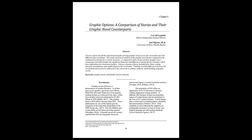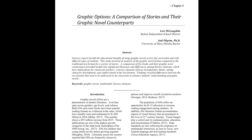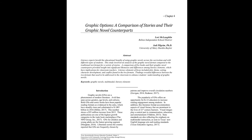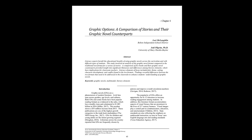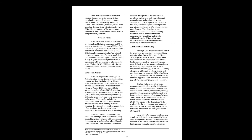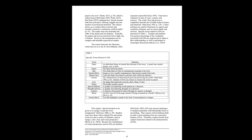Throughout their article or book, an author will cite and discuss the work of other researchers. When an author does this, they are looking back to earlier generations of researchers' work and building on their work.